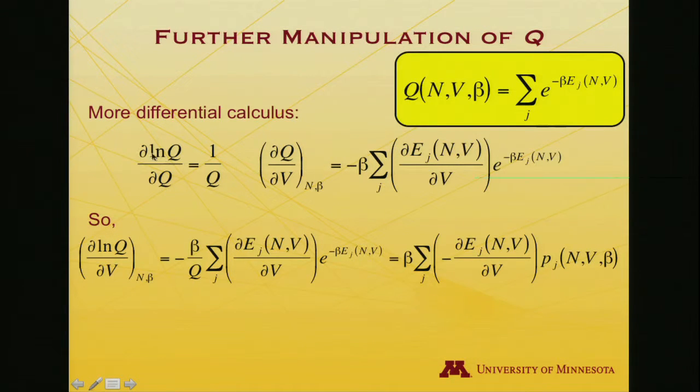Putting that all together, if I take partial log Q partial volume, I get minus beta over Q times this partial derivative times the exponential of the energy. This 1 over Q can be moved inside the sum and make this a probability, because it'll be an exponential divided by the partition function. I'll call this the probability of being in state J, and it depends on N, V, and beta.